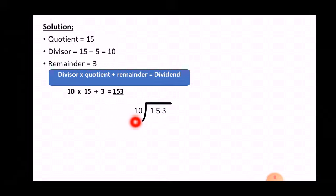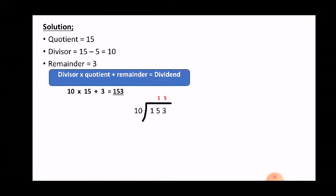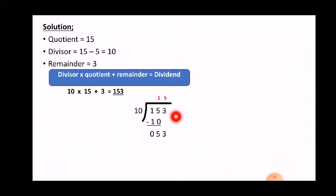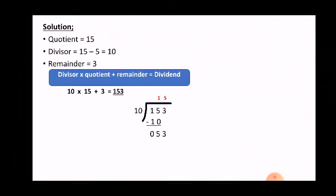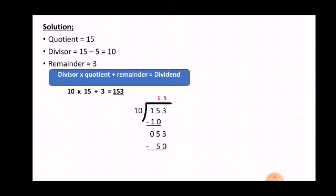First, write the number with the division sign. Recall the table of 10. The first digit 1 is smaller than 10, so take along 5 with it — that gives 15. 15 doesn't come in the table of 10, but 10 does, one time. Write 1 at the top and minus 10 below. Subtract: 5 minus 0 is 5. Now 5 is smaller than the divisor, so take along 3 — making 53. 53 doesn't come in the table of 10, but 50 does, 5 times. Write 5 at the top and minus 50 below. Subtract: 3 minus 0 equals 3. So the remainder is 3 and the quotient is 15.